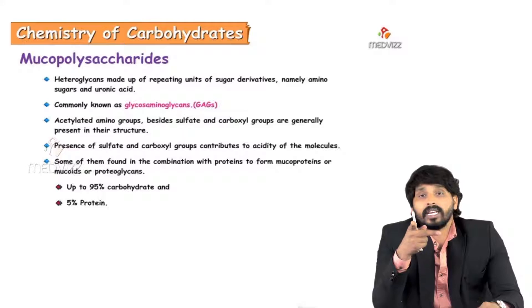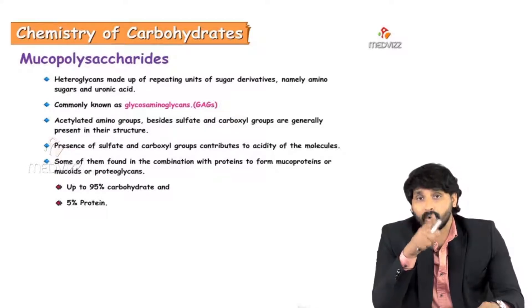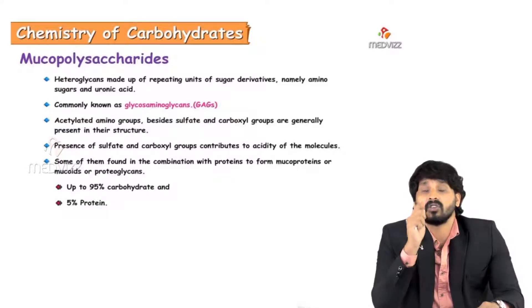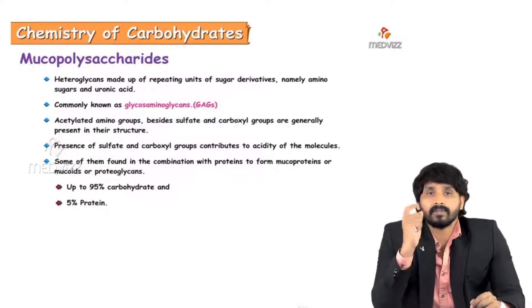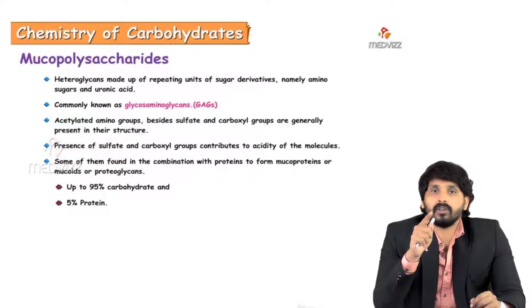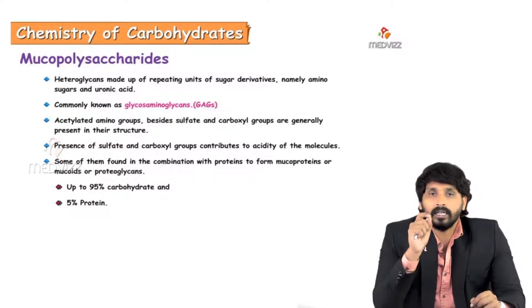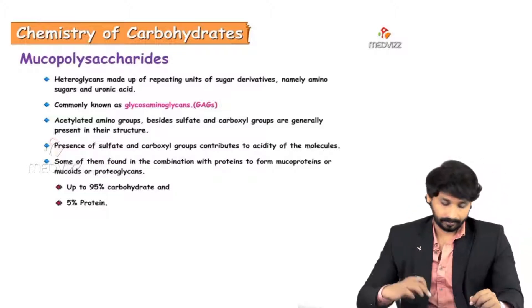This is reversed in the case of glycoproteins. In proteoglycans, the concentration of carbohydrate is more compared to protein, but in glycoproteins the concentration of protein is more and the concentration of carbohydrate is less.